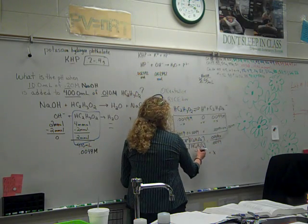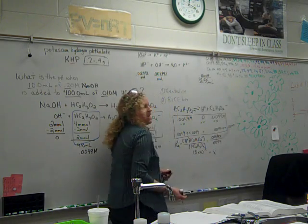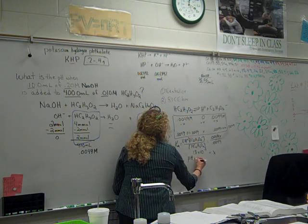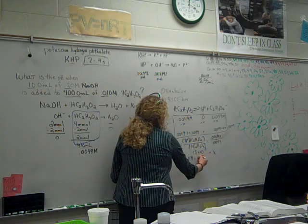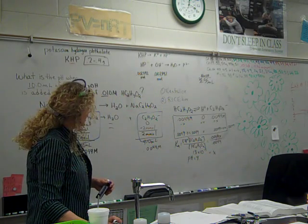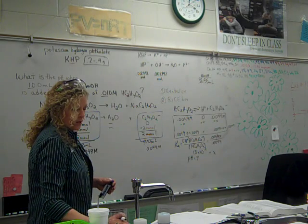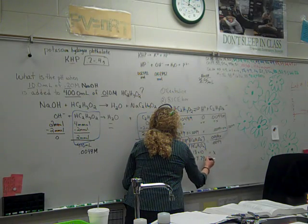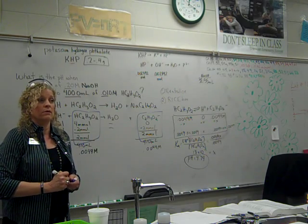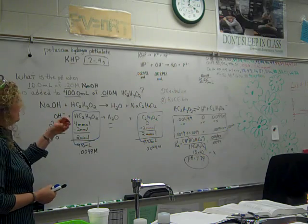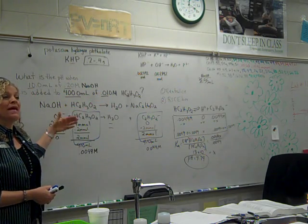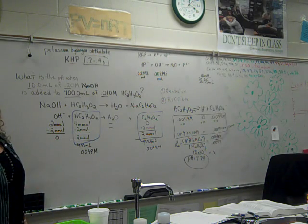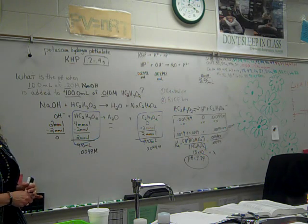Last but not least, we set up our Ka. Ka equals H⁺ times acetate ion over acetic acid. We plug in: 0.0049 times x over 0.0049. Those cancel out, so x equals Ka, which from appendix D is 1.8 × 10⁻⁵. That x represents H⁺. So pH equals negative log of 1.8 × 10⁻⁵, which gives 4.74. So if you take a strong base and react it with a weak acid, you can actually make a buffer if all your strong base disappears. If your strong base remains, then your solution is basic — the strong thing dominates everything.